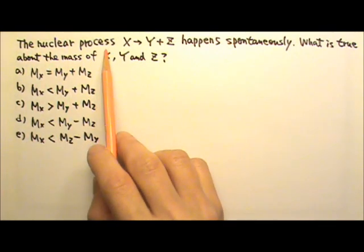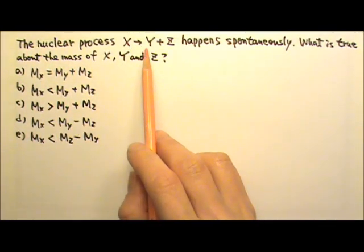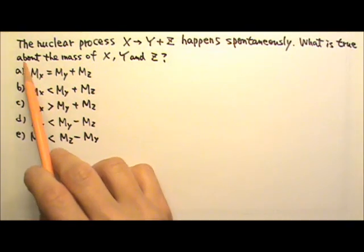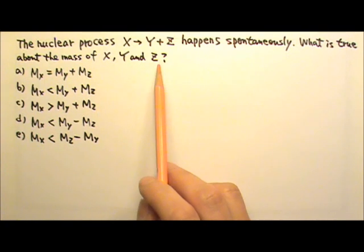The nuclear process x turning into y plus z happens spontaneously. What is true about the mass of x, y, and z?